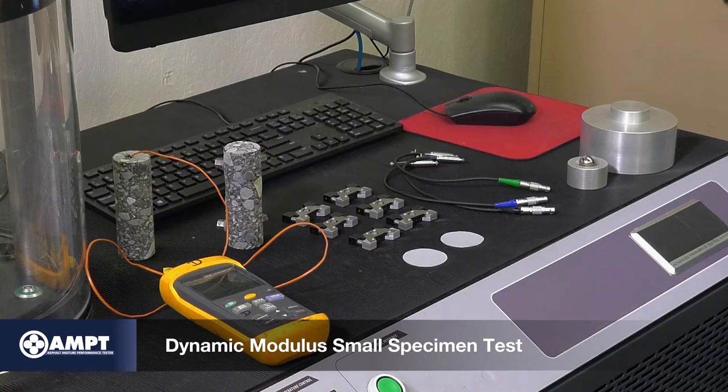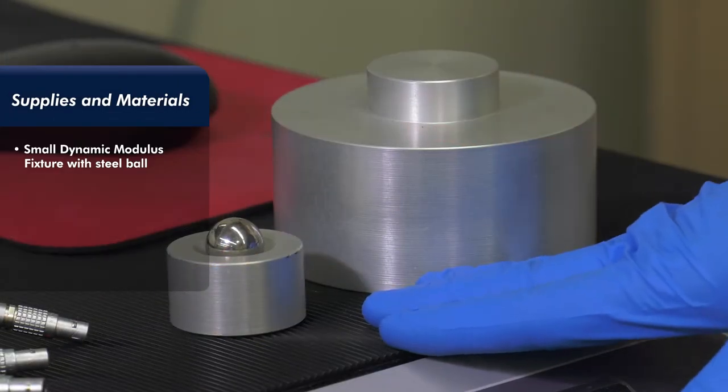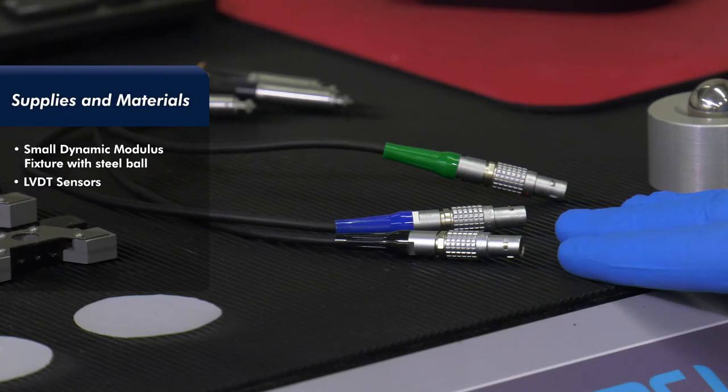Supplies and materials for the dynamic modulus test are shown here and include small-scale dynamic modulus fixture with steel ball, LVDT sensors or specimen mounted deformation measuring system.